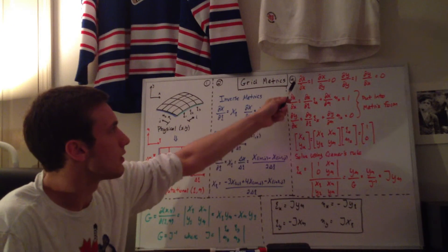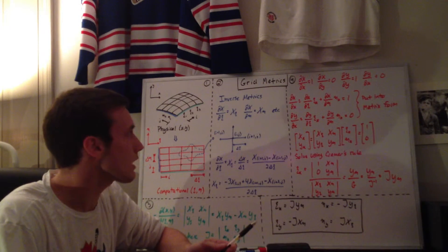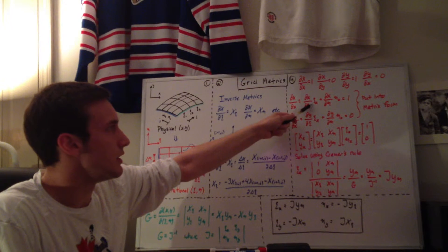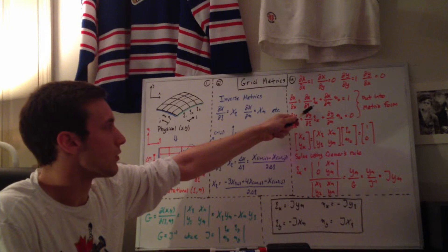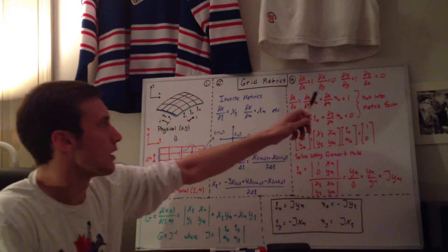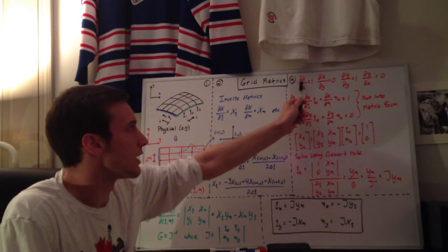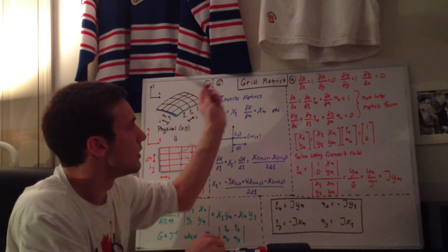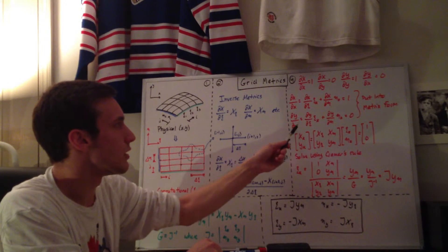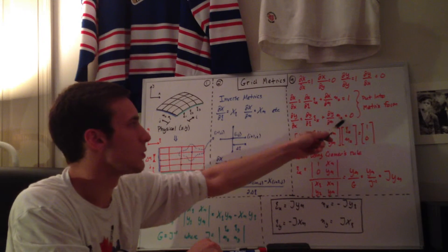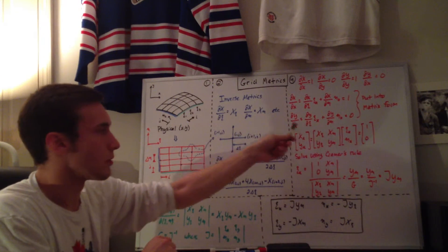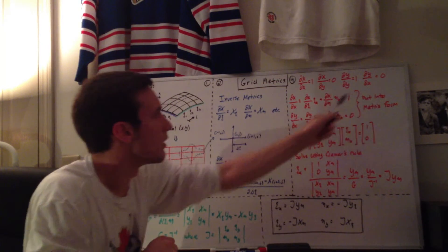Expanding each of these derivatives using the chain rule — and remembering that x is a function of zeta and eta — we get dx/dz · dz/dx plus dx/d-eta · d-eta/dx equals one. That's the expansion of dx/dx. For dy/dx, expanding with the chain rule gives dy/dz · dz/dx plus dy/d-eta · d-eta/dx equals zero. You do the same for the other two equations in the similar way.